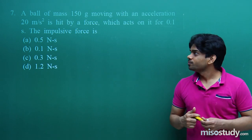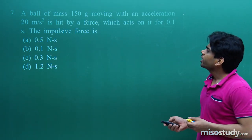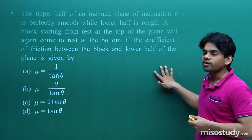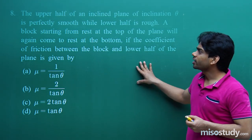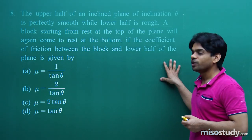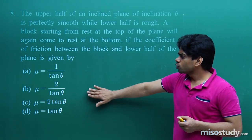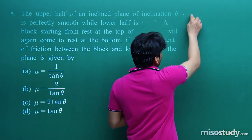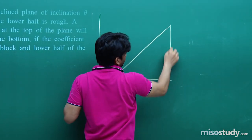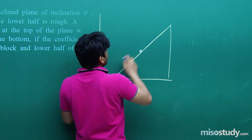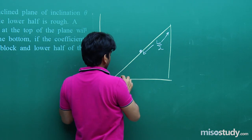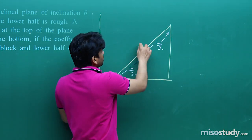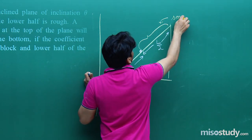Next, question number eight. The upper half of an inclined plane of inclination theta is perfectly smooth while the lower half is rough. A block starting from rest at the top of the plane will again come to rest at the bottom if the coefficient of friction is given by which expression? The total length is L, so each half is L/2.